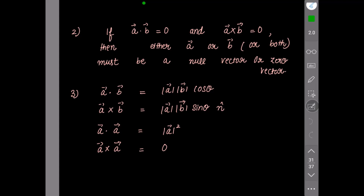As you can see, if we look at the angle between the same vectors, that will be zero. So sine of zero is zero. So this cross product is also zero, and if you solve them in determinant form using the formula, you also get the cross product of the same vectors to be equal to zero.